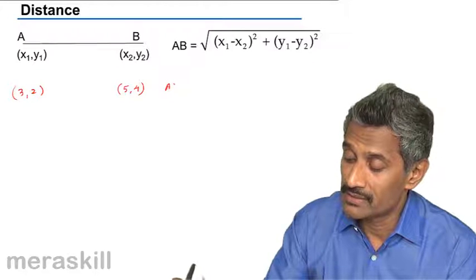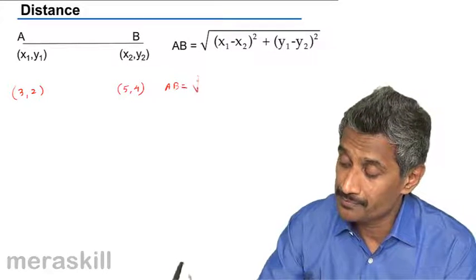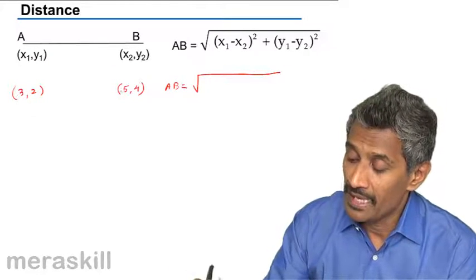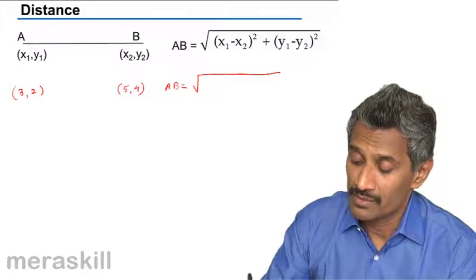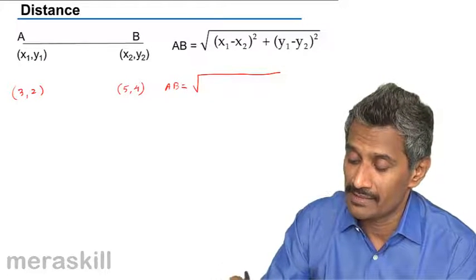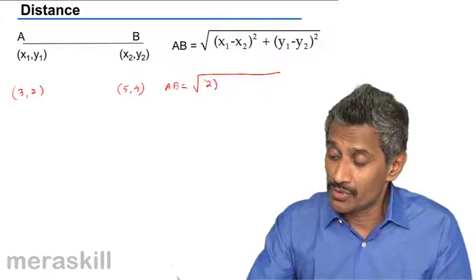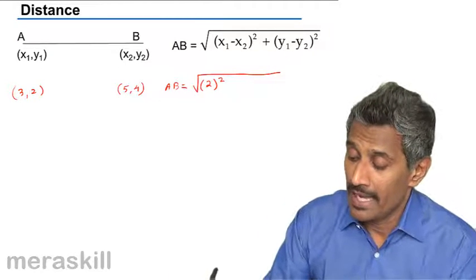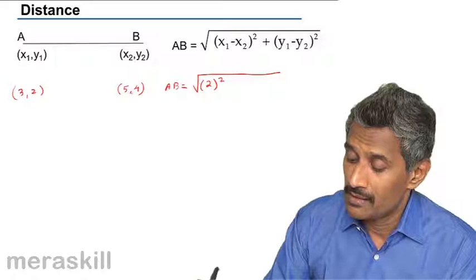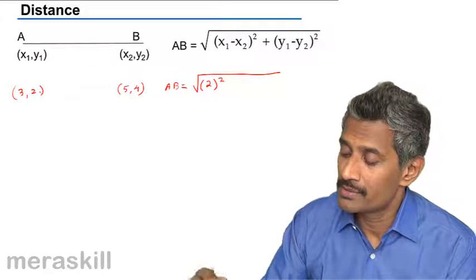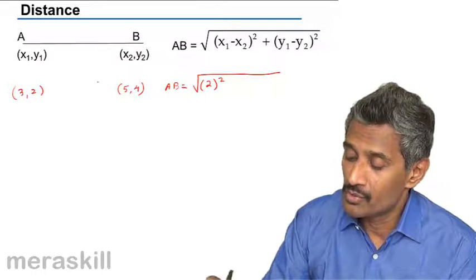In that case, distance AB would be given by x1 minus x2. That is, it can even be x2 minus x1, that is 5 minus 3, that is 2 square, and 4 minus 2.